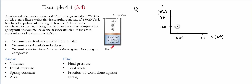This gives us the first state and the second state on the PV diagram. We draw a straight line connecting these two points and find the area under the curve. We divide this area into two geometries: a rectangle at the bottom, called Area 1, and a triangle at the top, called Area 2. Adding them gives the total work.